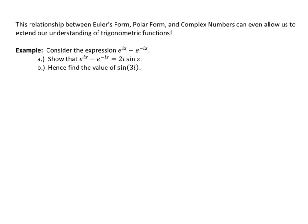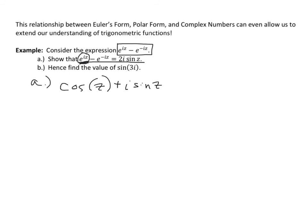So I have one final thing to share in this video. This relationship between Euler's form, polar form, and complex numbers even allows us to extend our understanding of trigonometric functions. In this last example, I want to consider the expression e to the iZ minus e to the negative iZ. Part A asks us to show that e to the iZ minus e to the negative iZ equals 2i·sine(z). Remember that when I've got e raised to an imaginary power, I can write that in cis notation. So e to the iZ is cosine(z) plus i·sine(z).